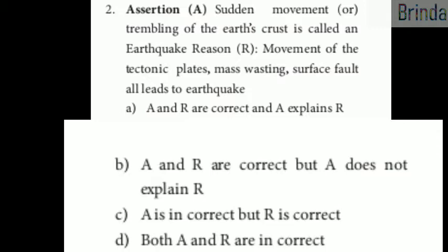Option B — assertion and reason are correct, but assertion does not explain reason. Option C — assertion is not correct but reason is correct. Option D — both assertion and reason are incorrect. The answer is A: assertion and reason are correct, and assertion explains reason.